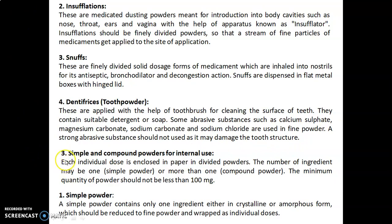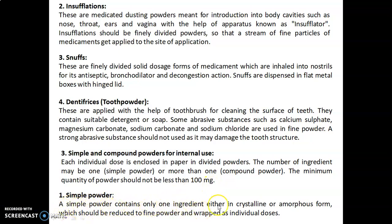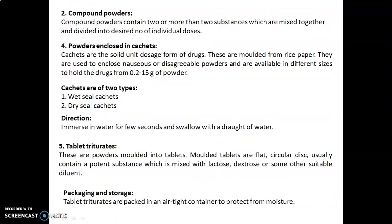The third class is simple and compound powder for internal use. Each individual dose is enclosed in paper in the divided powders. The number of ingredients may be one (simple powder) or more than one (compound powder). The minimum quantity of powder should not be less than 100 mg. A simple powder contains only one ingredient, either in crystalline or amorphous form, reduced to fine powder and wrapped as individual doses. Compound powders contain two or more substances mixed together and divided into the desired number of individual doses.